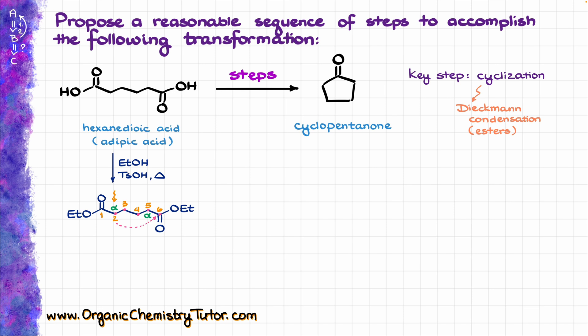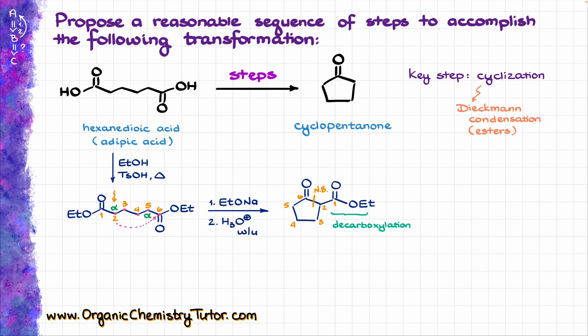That will overall give me a one-two-three-four-five membered ring, which is precisely what we want. In order to do my Dieckmann condensation, I'm going to bring in the base sodium ethoxide, and then after my acidic workup to neutralize the intermediate, I'm going to get the following five-membered ring. Renumbering my atoms one through six consistent with my original starting material, I can see that I've made a new bond between carbons two and six, just the way I wanted.